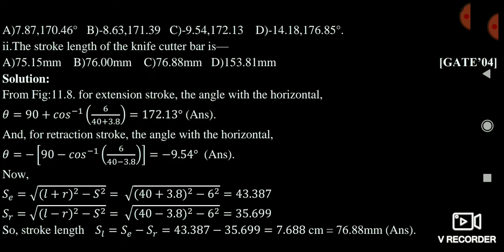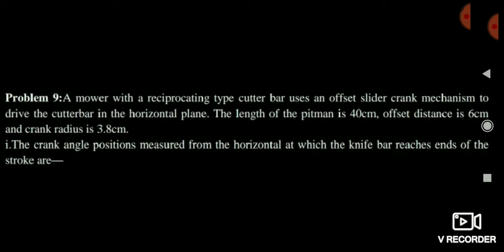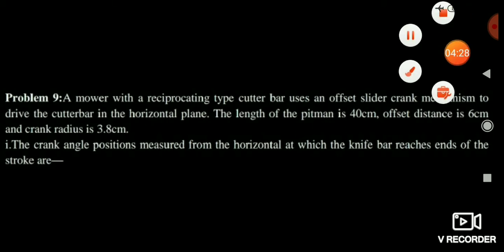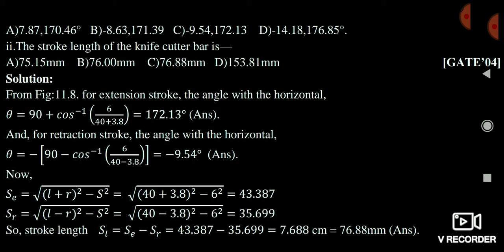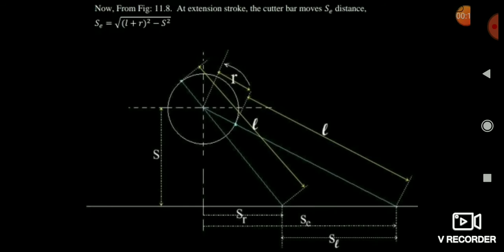Now see the next question. Here the crank radius is 3.8 cm, the length of pitman is 40 cm, and the offset distance is 6 cm. It is asking to calculate the crank angle measured from the horizontal at the ends of the stroke. It is asking about the angle with the horizontal. In the extension stroke, the angle with the horizontal is always greater than 90 degrees.